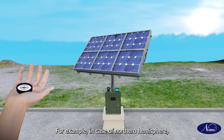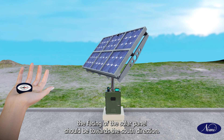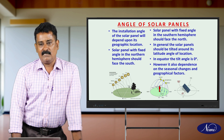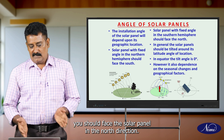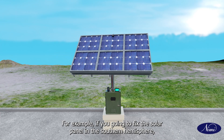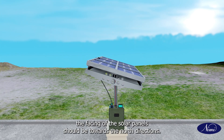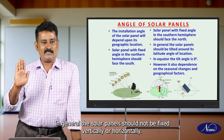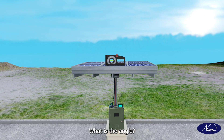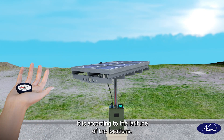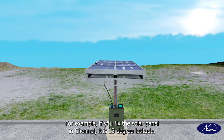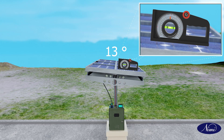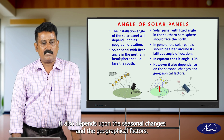In the case of the northern hemisphere, the facing of the solar panel should be towards the south direction. Similarly, if you are going to fix the solar panel in the southern hemisphere, the facing of the solar panel should be towards the north direction. In general, the solar panel should not be fixed vertically or horizontally — it should be fixed at an angle according to the latitude of the location. For example, if you fix the solar panel in Chennai, which is at 13 degrees latitude, the tilting of the solar panel should be 13 degrees. It also depends upon seasonal changes and geographical factors.